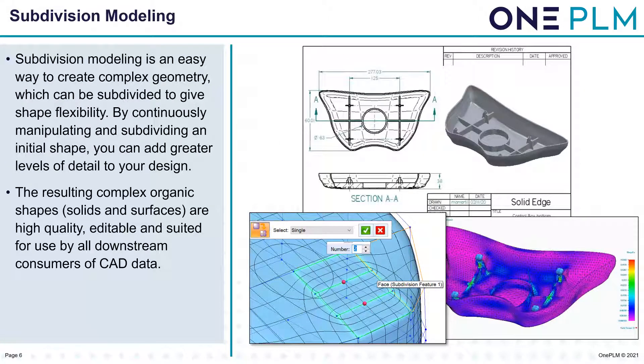Similar technology has been proven in the entertainment industry, and subdivision modeling has been adopted to suit manufacturing needs by embedding it within Solid Edge itself. Subdivision modeling is an easy way to create complex geometry that can be subdivided to give shape flexibility. By continuously manipulating and subdividing an initial shape, we can add greater levels of detail. The resulting complex organic shapes — both solids and surfaces — are high-quality, editable, and suited for use by all downstream consumers of the CAD.